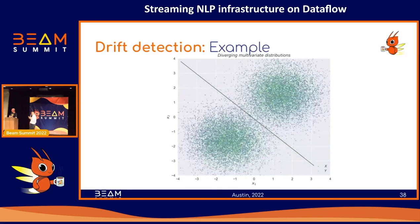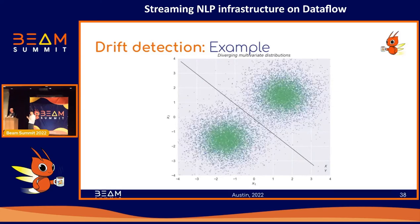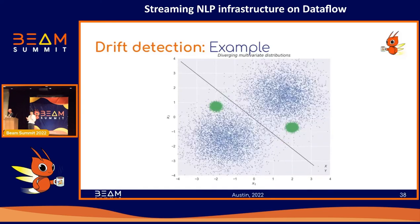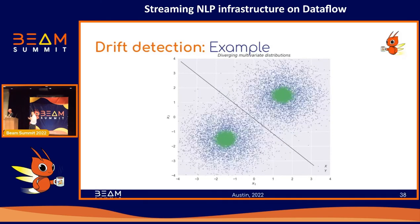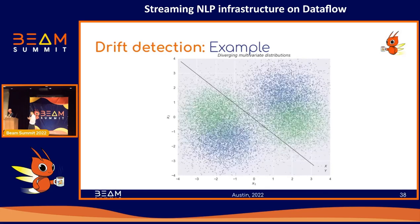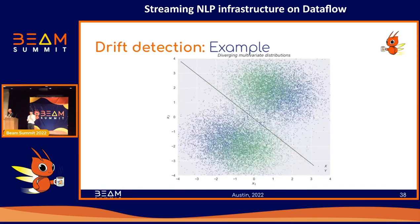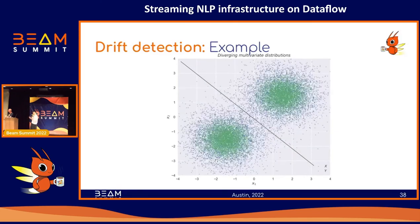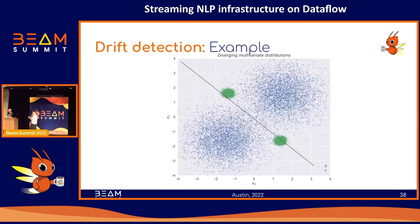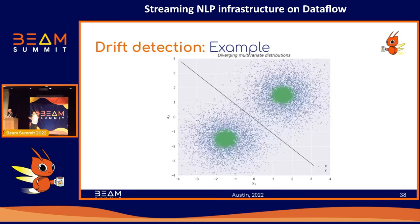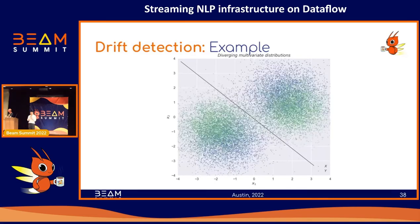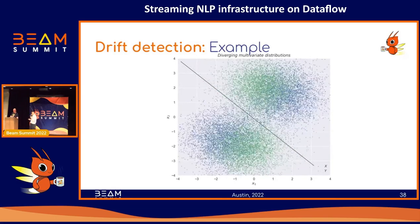In a machine learning context, the blue data points could represent the training data the model saw at training time, and the green data points could represent production data that a deployed model is seeing. Suppose we trained a simple linear regression model on this data to classify the two blue clusters — we'd see a model function like this. However, if we saw the green data during production time, our model accuracy would degrade as the green data drifts away. Unless we directly calculate and monitor drift statistics, we don't have a clear idea of how a model is performing, particularly since we don't have labels on our predictions in production.